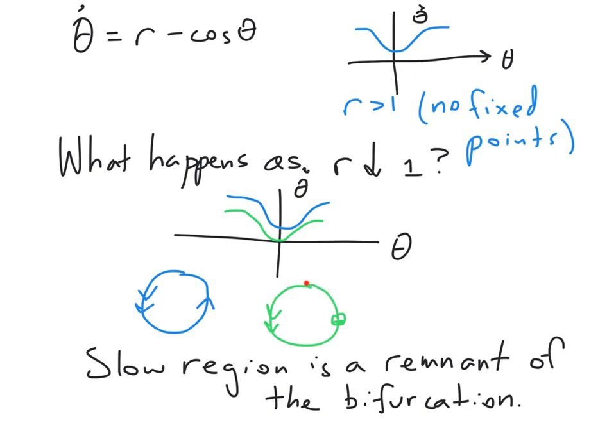Specifically, when we exactly hit one and the bifurcation happens, no matter what value of theta we start at, we're going to approach zero. There's going to be the development of this half stable fixed point. But when r is slightly greater than one, we're going to move quickly over here and slowly over here. It's almost as though when r is a little bit above the bifurcation, there's a slowness that is kind of a remnant of the bifurcation.